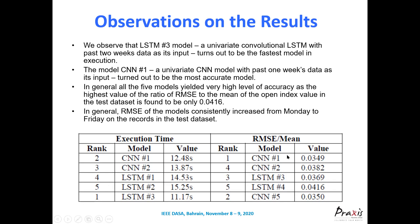In terms of rankings: for execution speed, LSTM3 ranks first at 11.17 seconds; CNN1 ranks third in speed. For accuracy (RMSE by mean), CNN1 with one prior week of data as input ranks first with a value of 0.0349. The least accurate model is LSTM3 — the encoder-decoder convolutional LSTM — which has the lowest execution time but the highest relative RMSE.